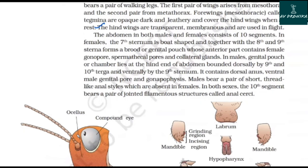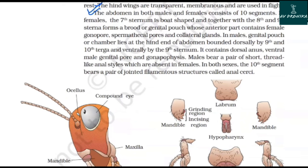The abdomen in both males and females consists of 10 segments. In females, the 7th sternum is boat-shaped and together with the 8th and 9th sterna forms a brood or genital pouch, whose anterior part contains the female gonopore, spermathecal pores, and collateral glands. In males, the genital pouch lies at the hind end of the abdomen, bounded dorsally by the 9th and 10th terga and ventrally by the 9th sternum, containing the anus, male genital pore, and gonapophysis. Males bear a pair of short thread-like anal styles, which are absent in females. In both sexes, the 10th segment bears a pair of jointed filamentous structures called anal cerci.